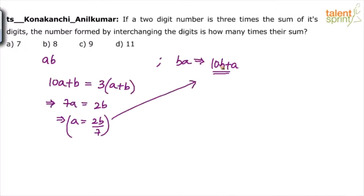Because the number formed by interchanging the digits is what? 10B plus A. So 10B plus A can be taken as 10B plus 2B by 7. We have to find out the number formed by interchanging the digits is how many times their sum. Let us assume it is N times their sum. So N into A plus B.